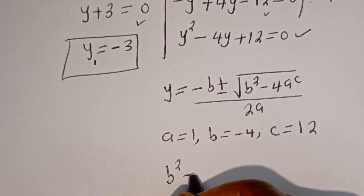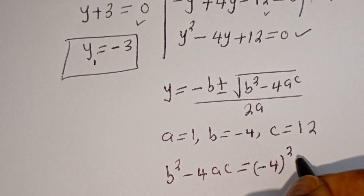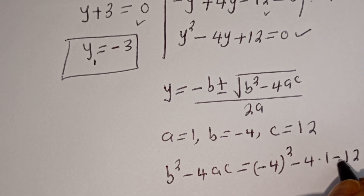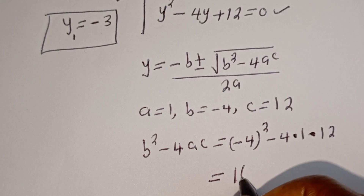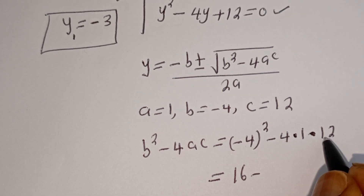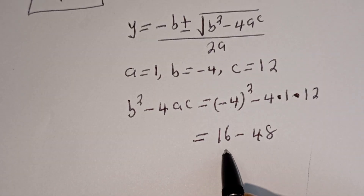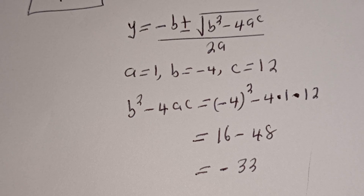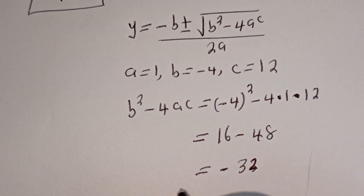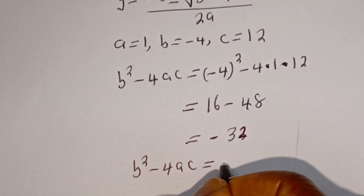Let's consider the discriminant first. b squared minus 4ac equals minus 4 squared minus 4 multiplied by 1 multiplied by 12. That is 16 minus 48. Subtracting gives minus 32. Therefore, b squared minus 4ac equals minus 32.